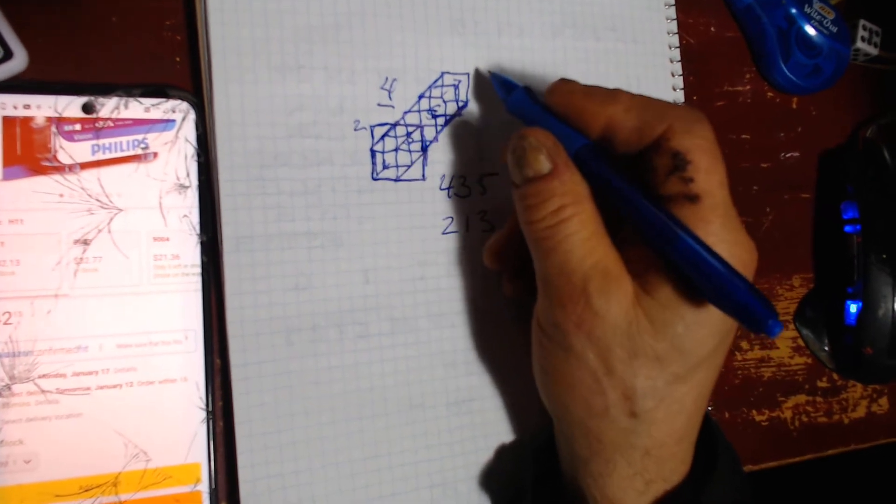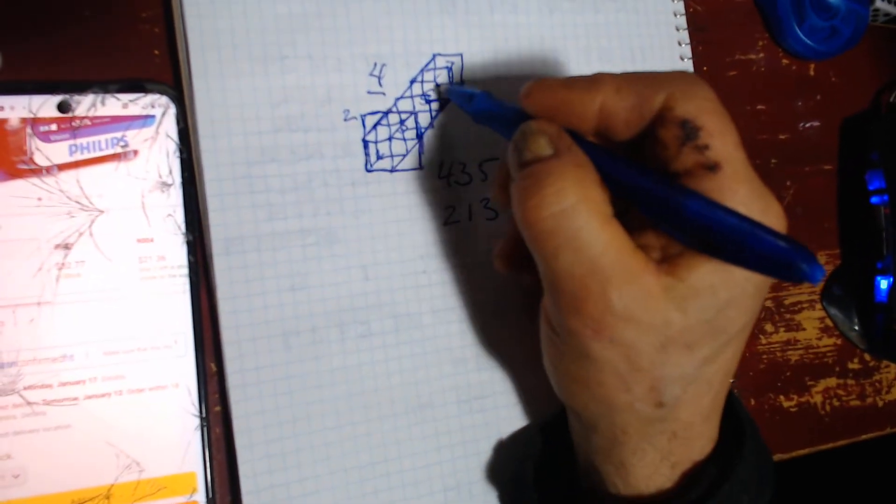Instead of now having 1, 3, 5, 7, you have the in-between, which is 2, 4, 6.